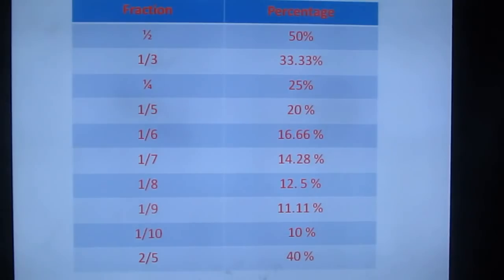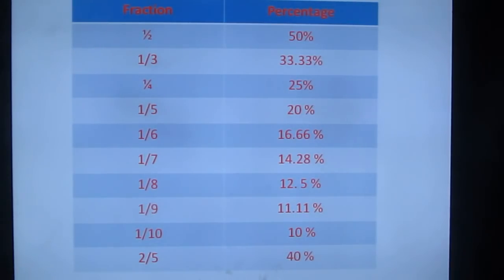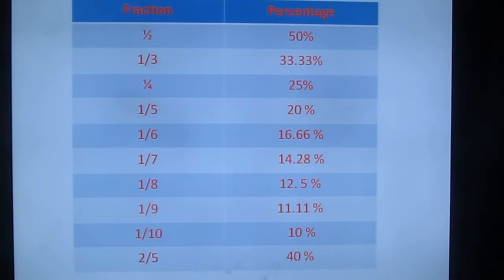You may wonder I'm not giving any formula — formulas are not necessary. Just keep in mind: 1/2 = 50%, 1/3 = 33.33%, 1/4 = 25%, 1/5 = 20%, 1/6 = 16.66%, 1/7 = 14.28%, 1/8 = 12.5%, 1/9 = 11.11%, 1/10 = 10%. And since 1/5 is 20%, then 2/5 is 40%.